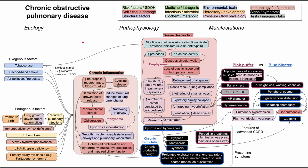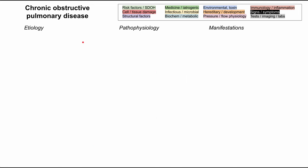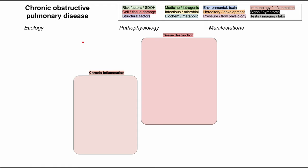Let's go ahead and clear all of these boxes and get started. COPD can be caused by two big buckets of processes: chronic inflammation and tissue destruction. All of the pathophysiology we talk about will fit into one of these two buckets, and the manifestations will come out of them. These buckets are connected as well, so they relate to each other. Chronic inflammation leads to tissue destruction, as we'll see.